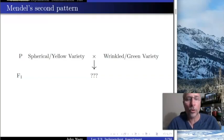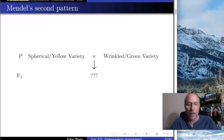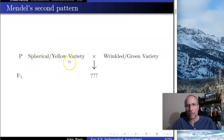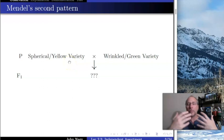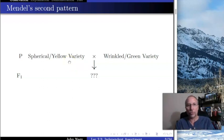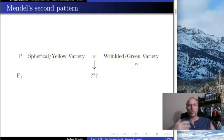As promised in the previous lecture, we're now going to look at the second half of Mendel's paper. In that paper he was asking questions like this: what happens if I take a variety — remember this variety is true breeding. He went through a series of generations where he self-fertilized these plants to make sure they were true breeding. So he has true breeding spherical or round, and yellow, and he crosses those with wrinkled and green.